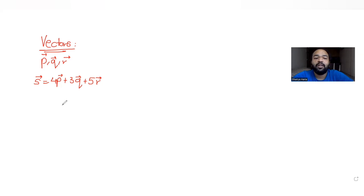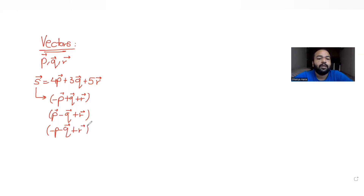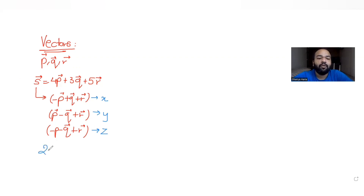Further, they are telling us that the components of this vector s̄ along (−p+q+r), along (p−q+r), and along (−p−q+r) are x, y, and z respectively. So the components along these three new directions are x, y, and z for the same vector s̄. We need to find the value of 2x plus y plus z.